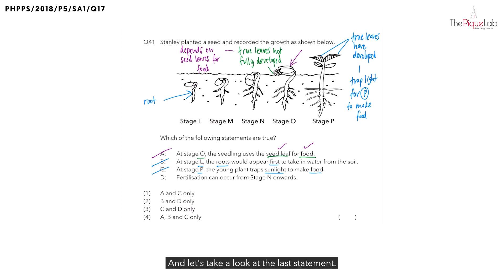And let's take a look at the last statement. Fertilization can occur from stage N onwards. When does fertilization occur? Fertilization occurs after the process of pollination. And what structure must be present for these two processes to happen? Pollination and fertilization must happen in flowers. Do you see any flowers from stage L to stage P? We don't see any flowers from stage L to stage P. The flowers only develop in the adult stage. So, let's write that down.